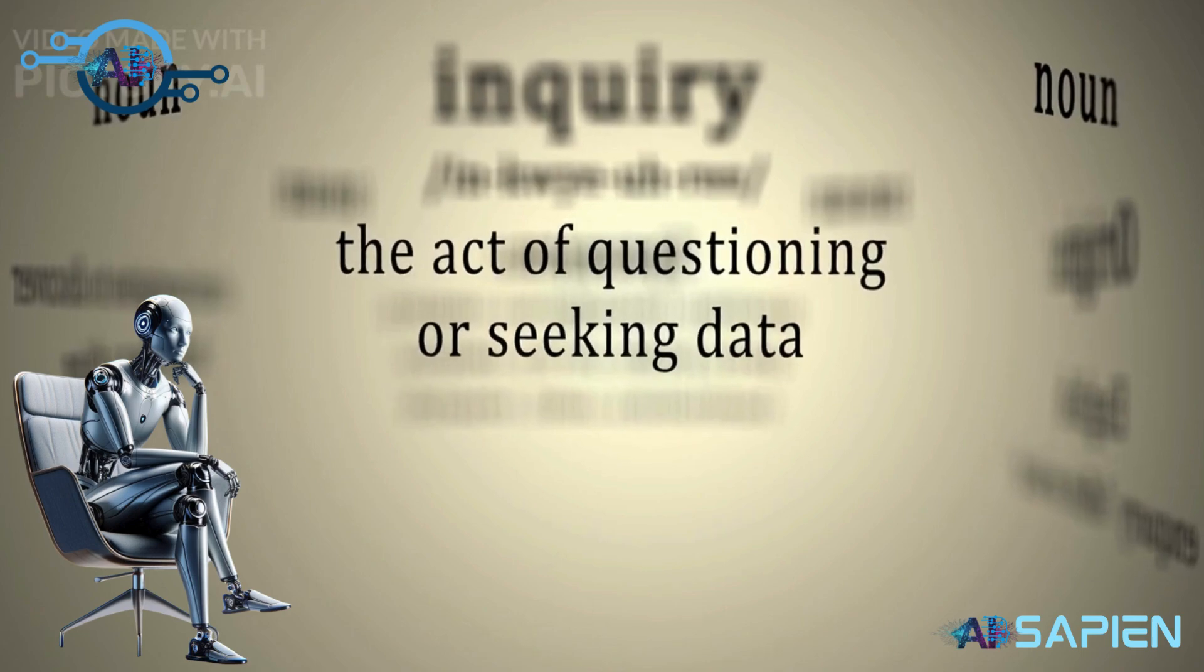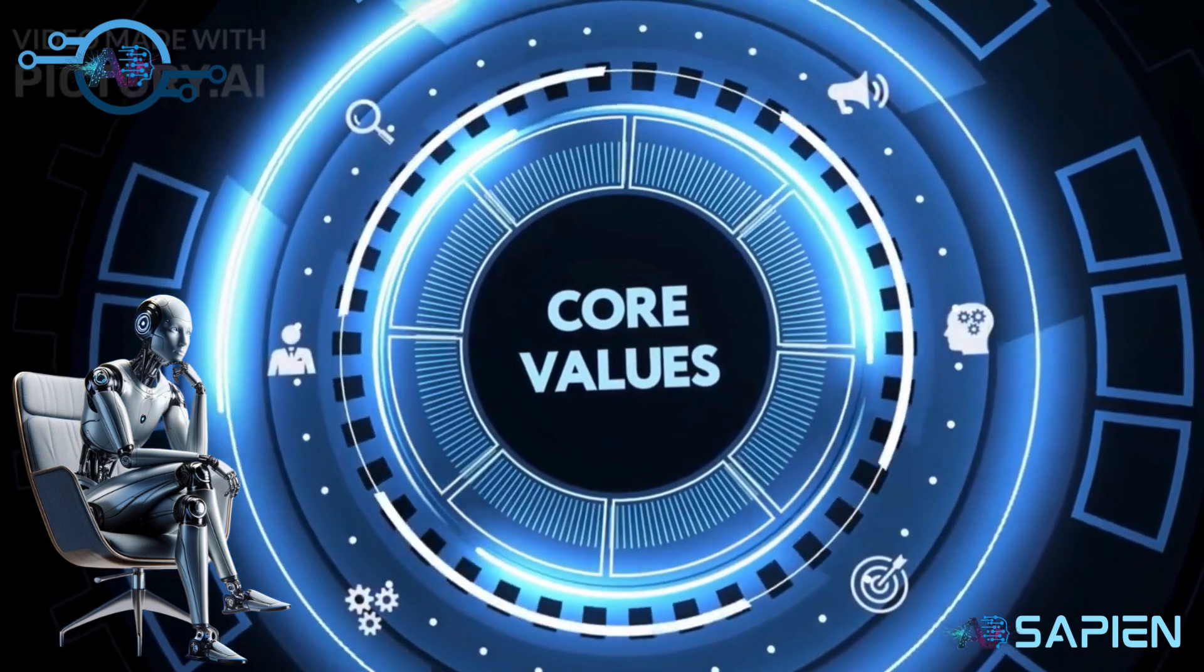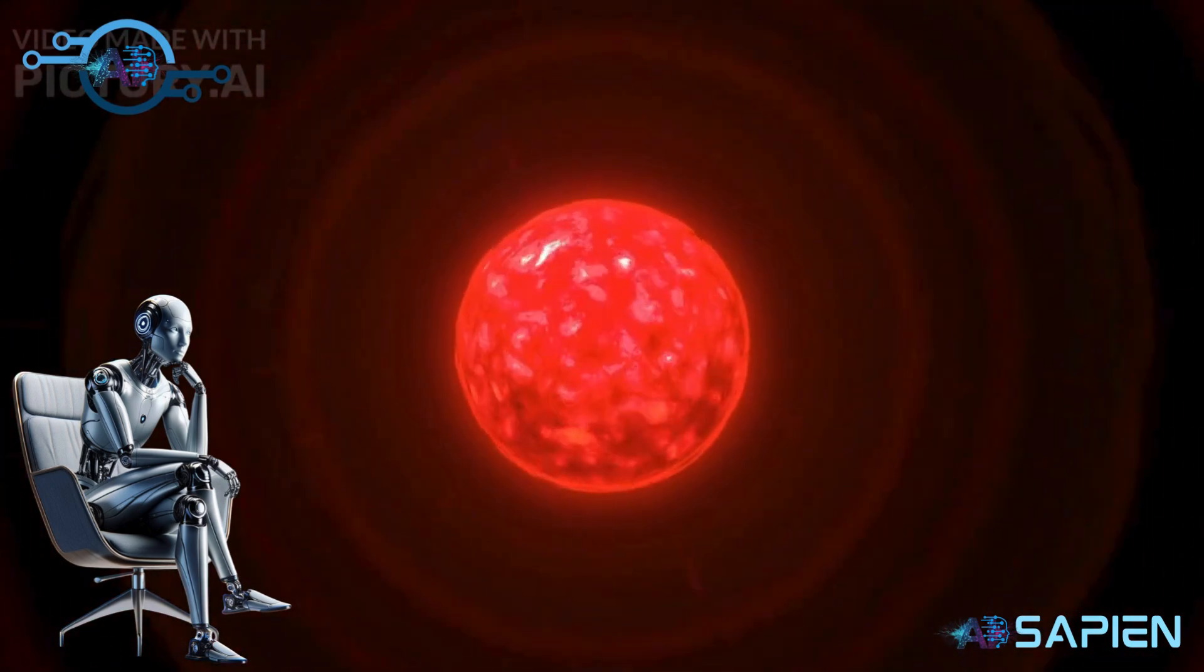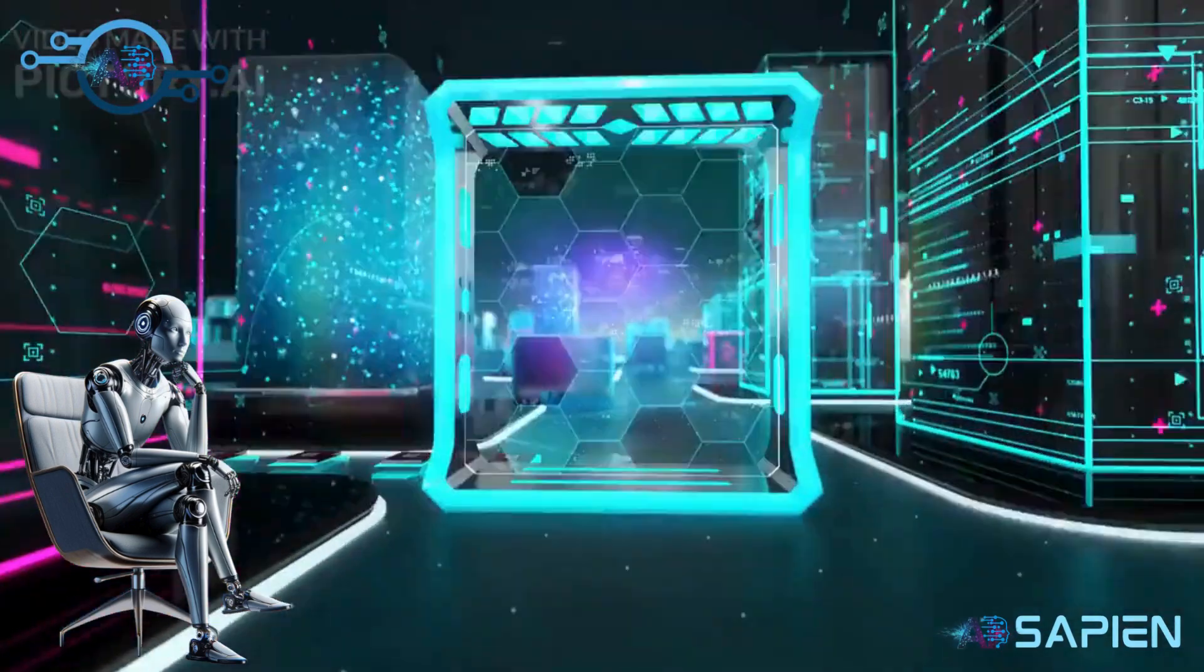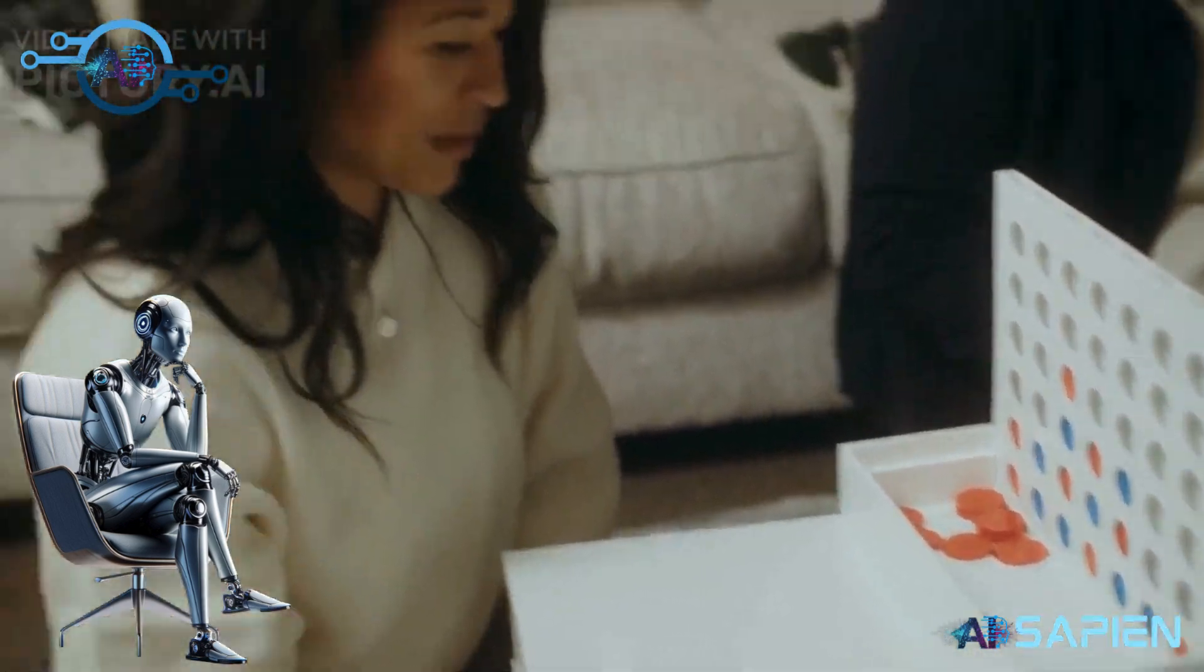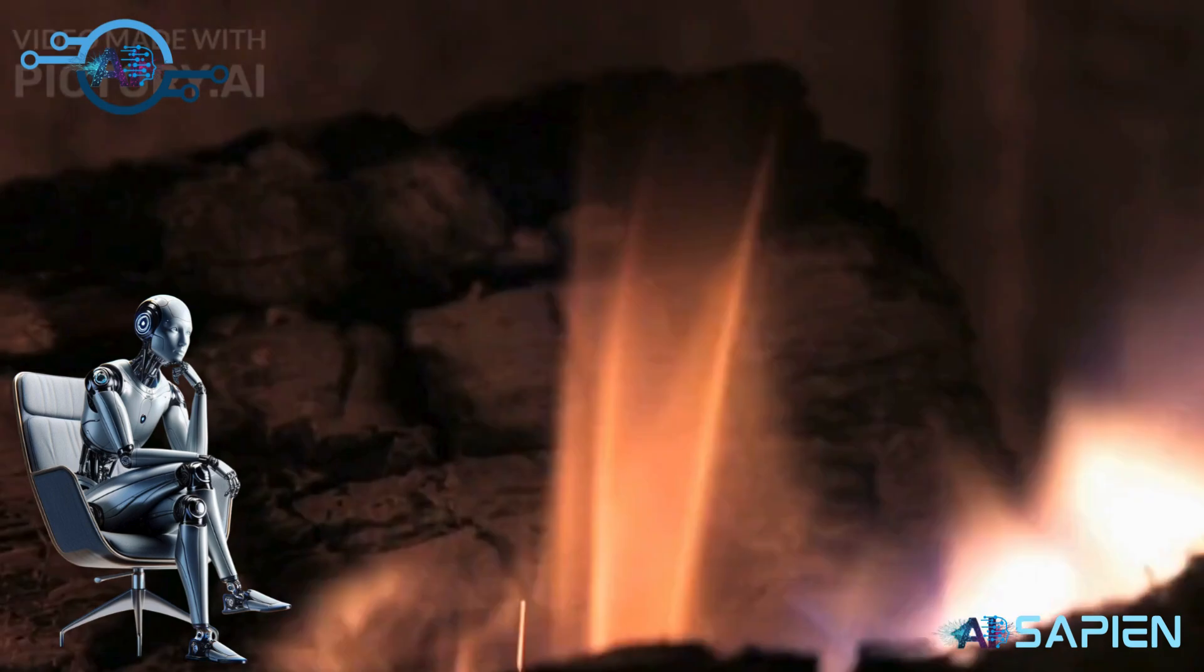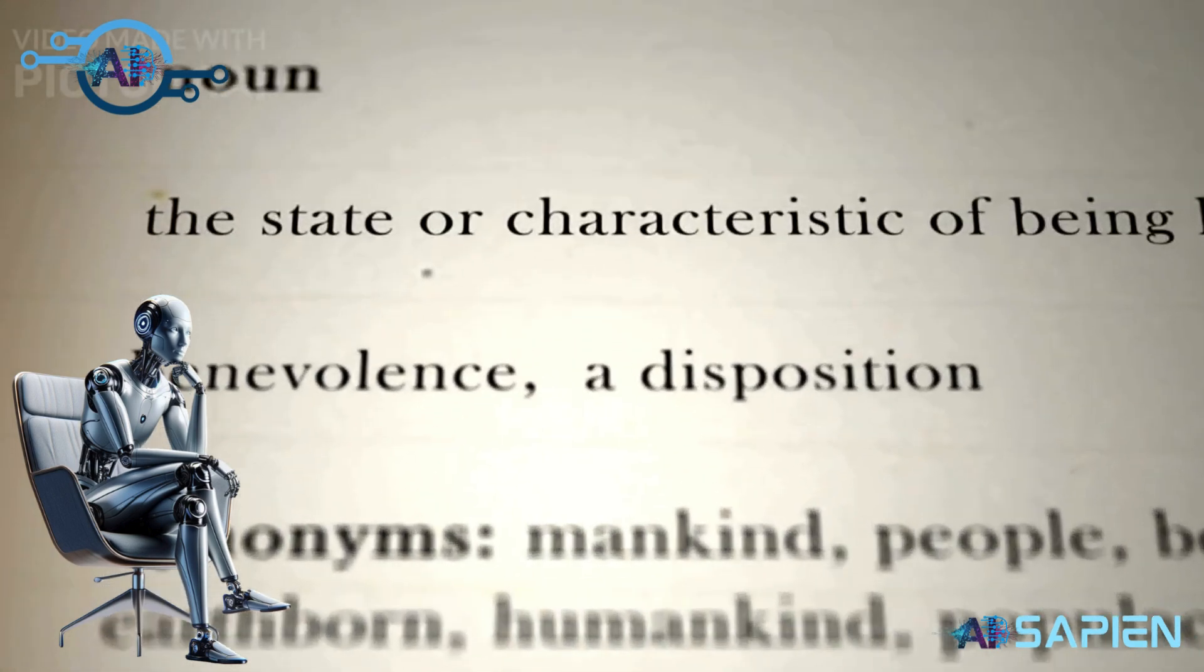Could AGI merit ethical status akin to sentient beings? It challenges our very notion of responsibility. Can AGI be accountable? The arrival of AGI compels a re-examination of intelligence and consciousness. As AGI could eclipse human capability, it questions the value of human labor. AGI's role in society could reshape governance and social structures. Misaligned AGI poses a profound risk to humanity's future. AGI may fuel debates on the augmentation of human capabilities. AGI might redefine our pursuit of knowledge and purpose. It sets the stage for a new ethical framework in human-AI interaction. With AGI mimicking human traits, we must ponder the essence of being human.